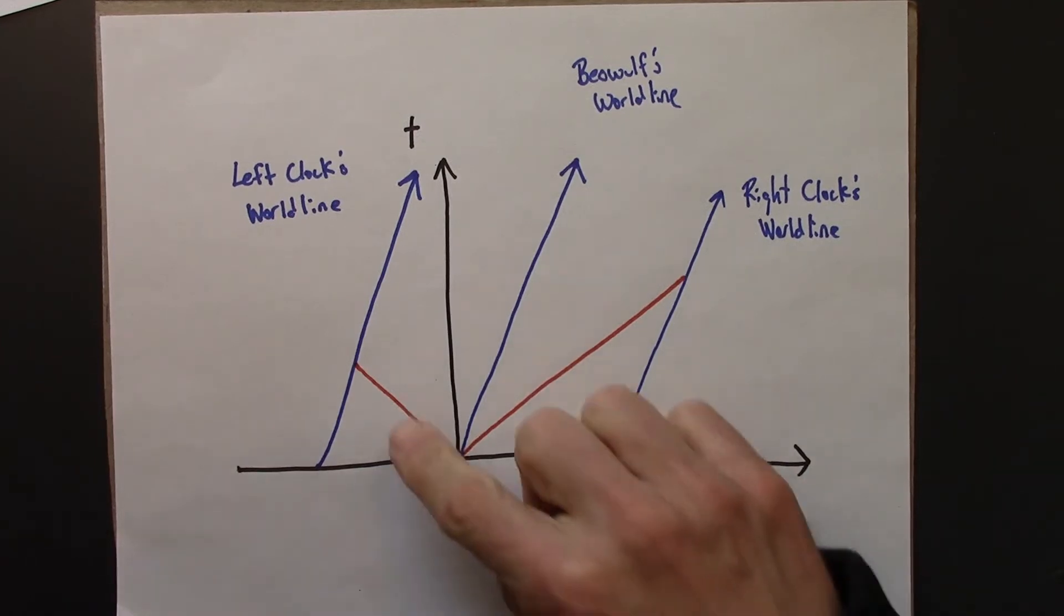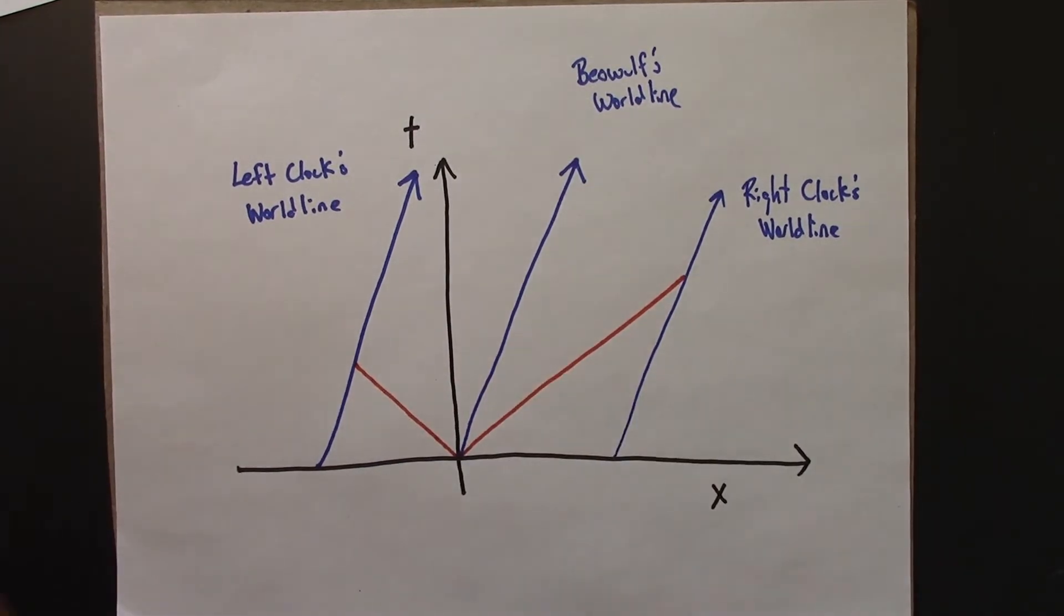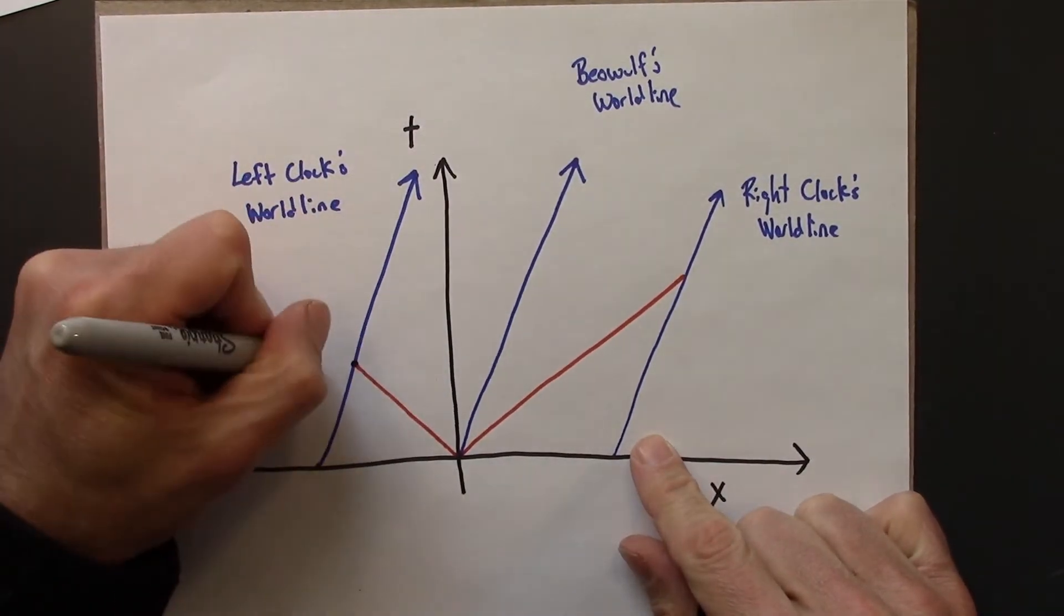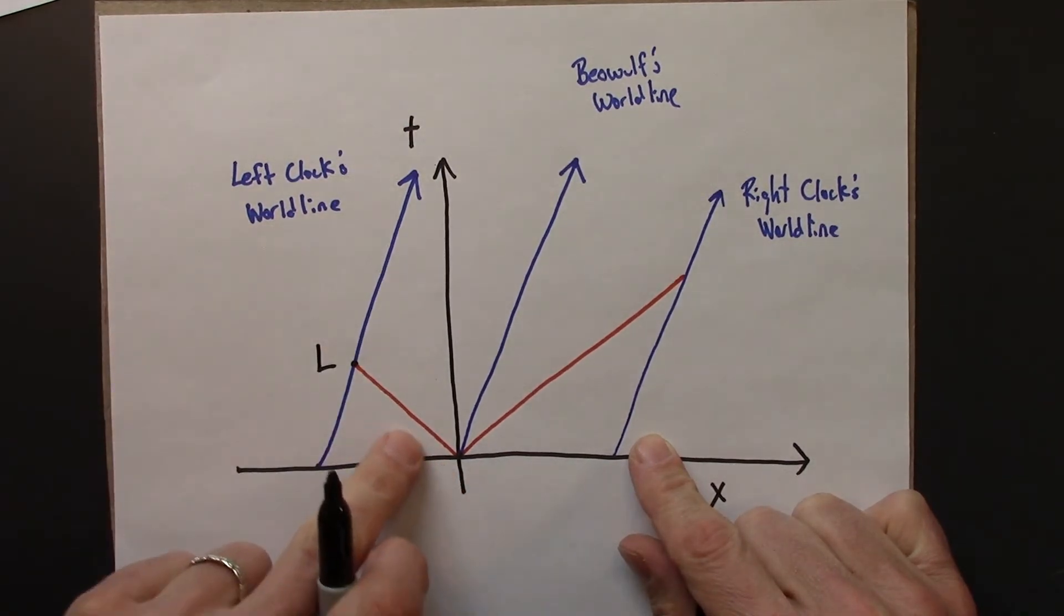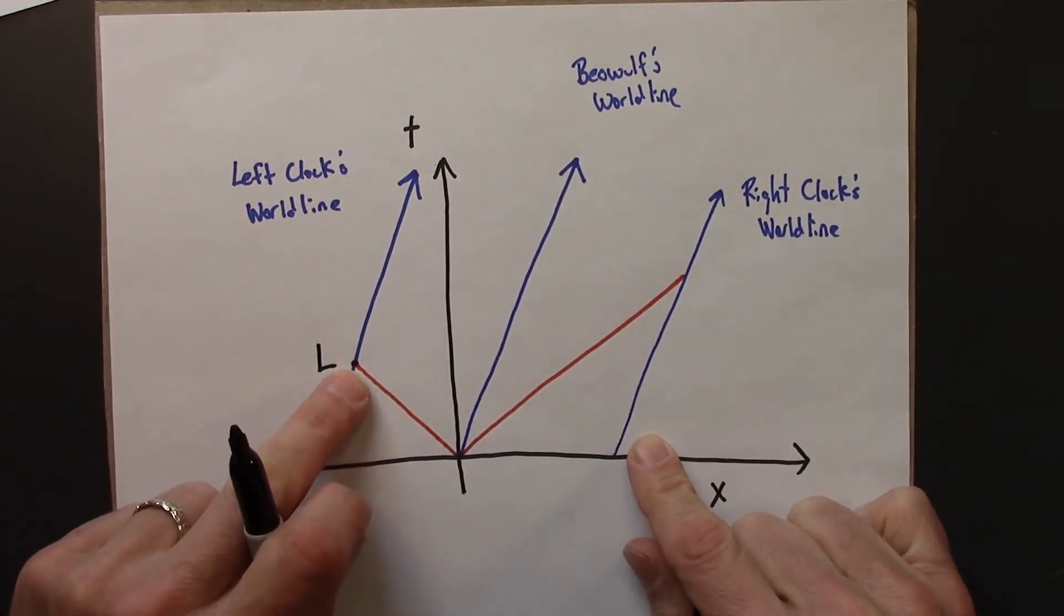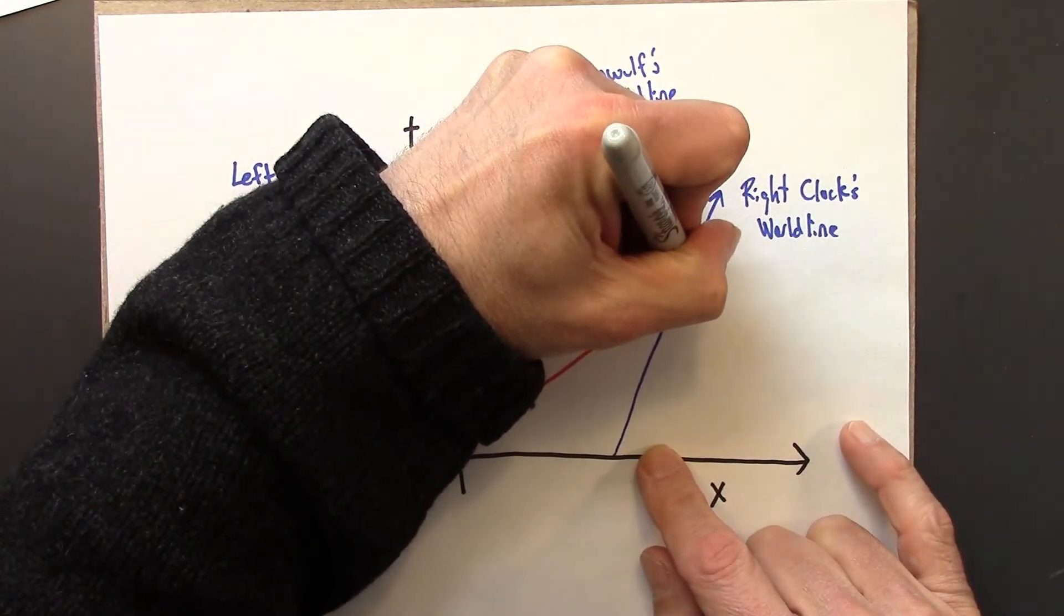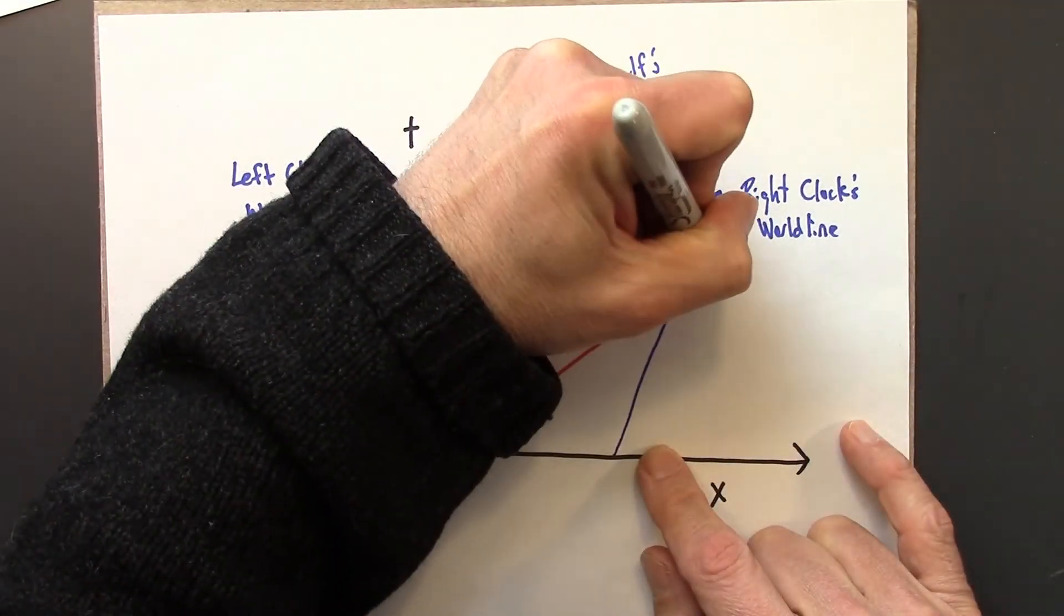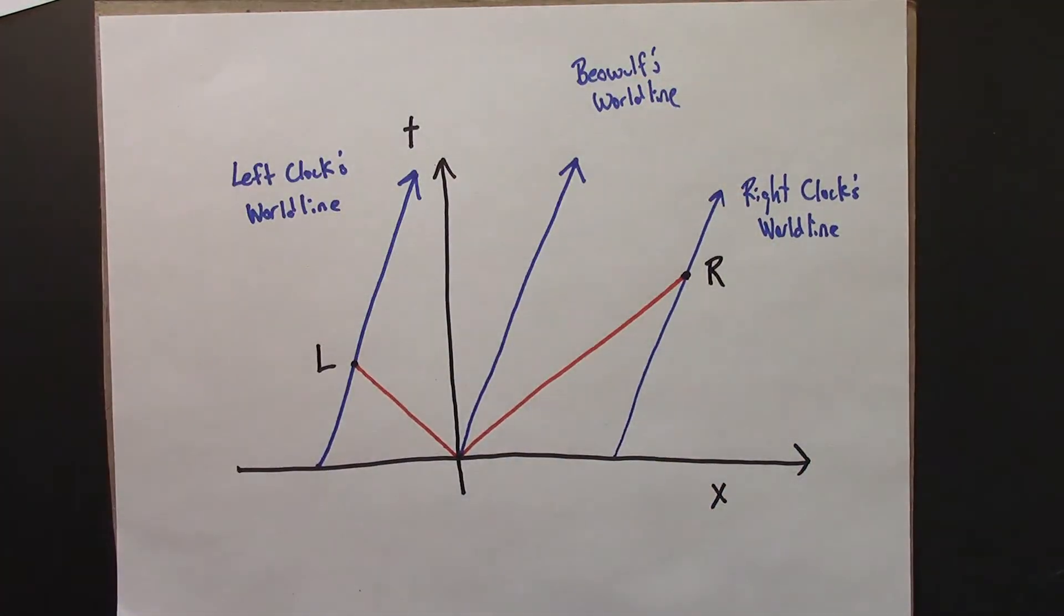All right, so now we have our events. Event L, that's when the light flash hits the left clock. And then event R, when the light flash hits the right clock.